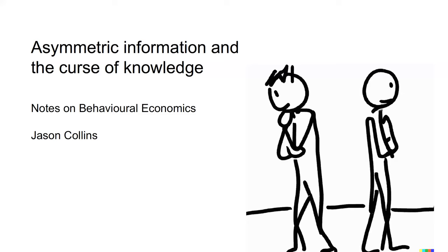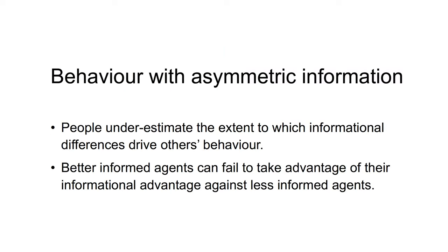There is substantial empirical evidence that people do not behave in this way. For example, people tend to underestimate the extent to which informational differences drive others' behavior. They often act as if others have the same information set that they do. Where an agent has information that another doesn't, this phenomenon is known as the curse of knowledge.